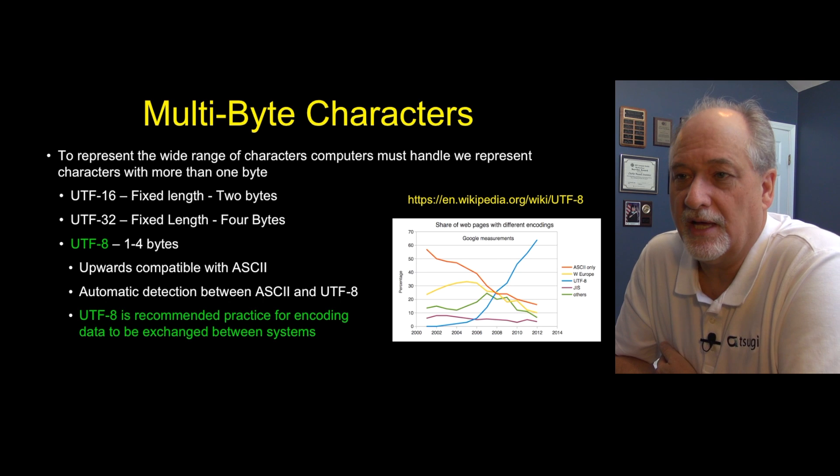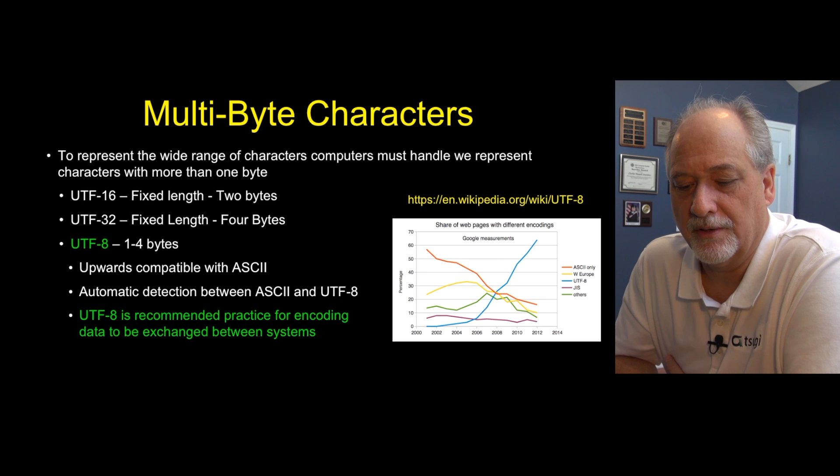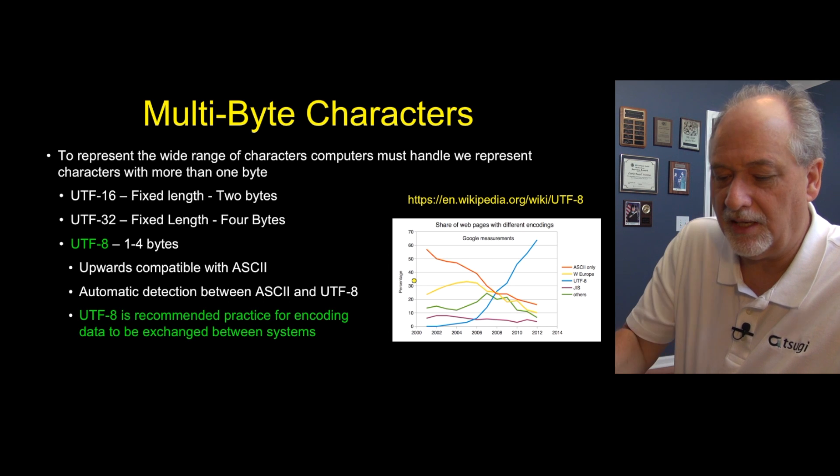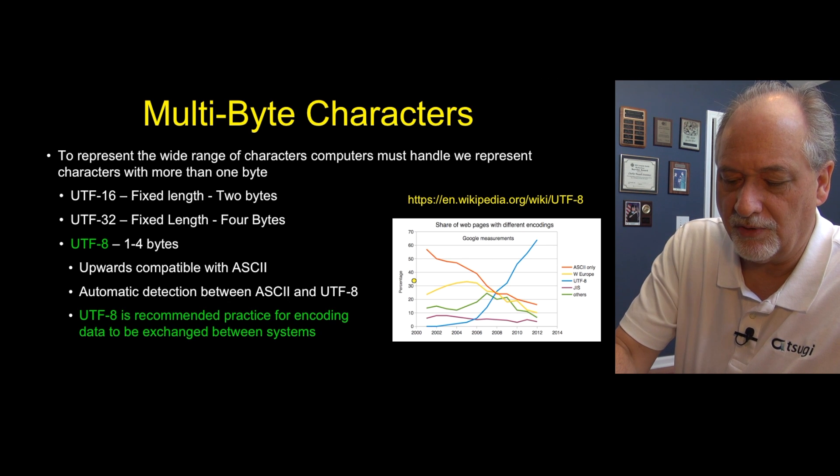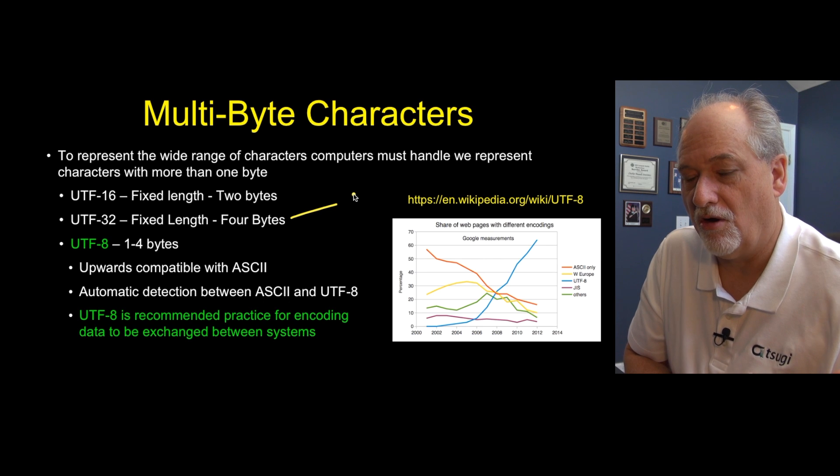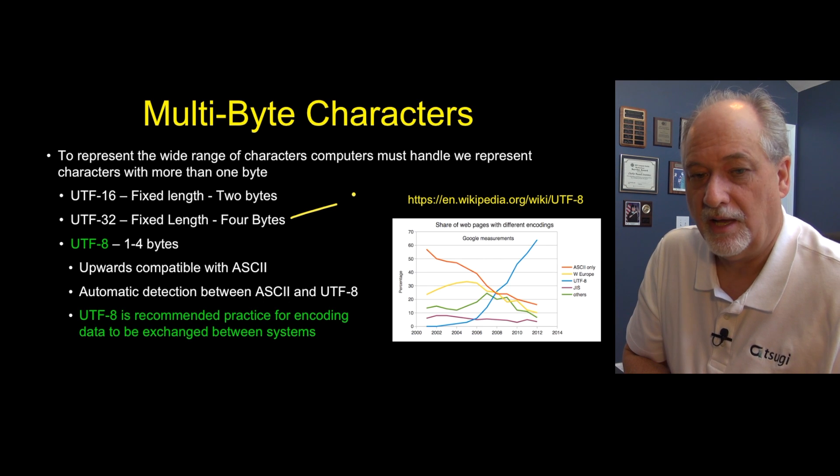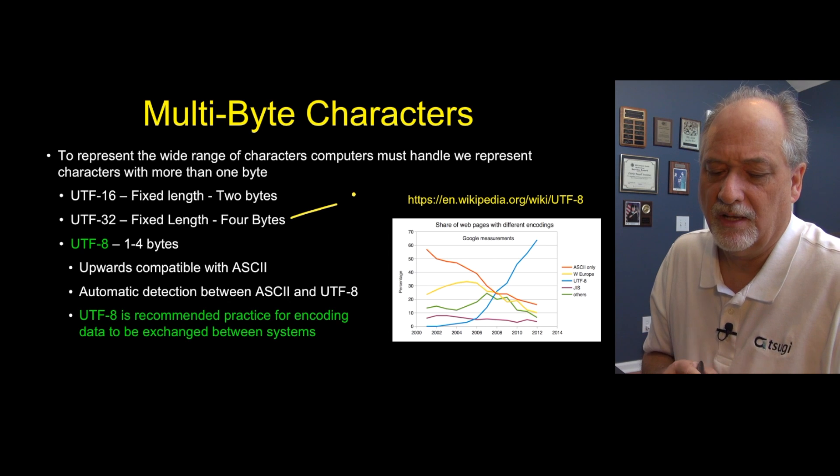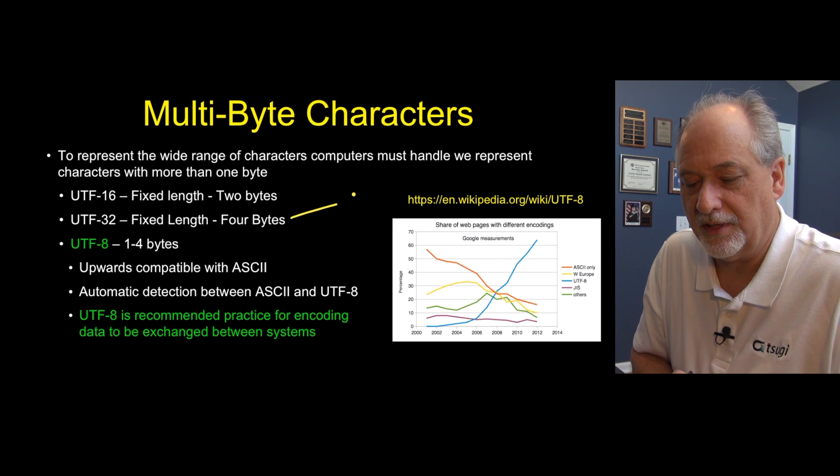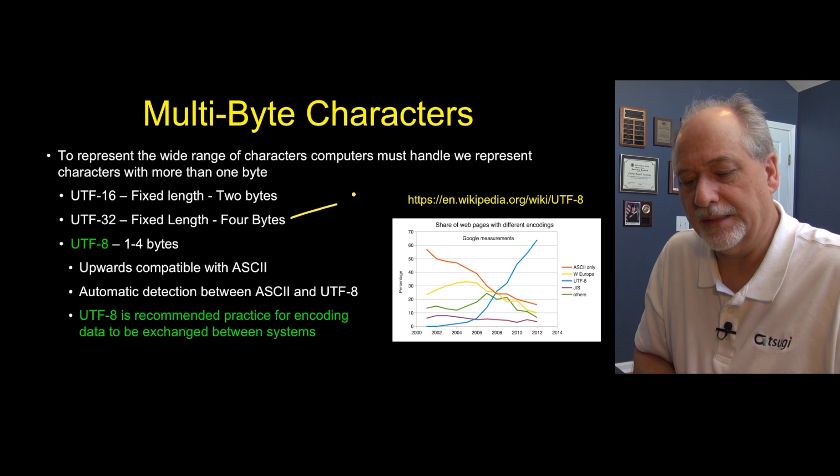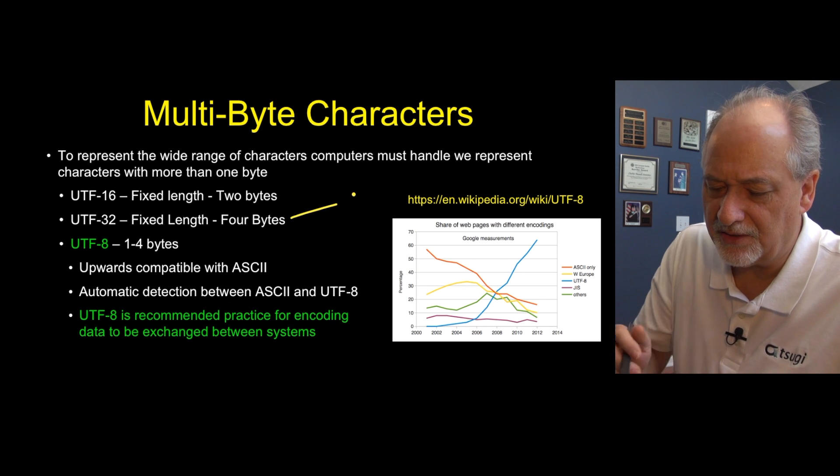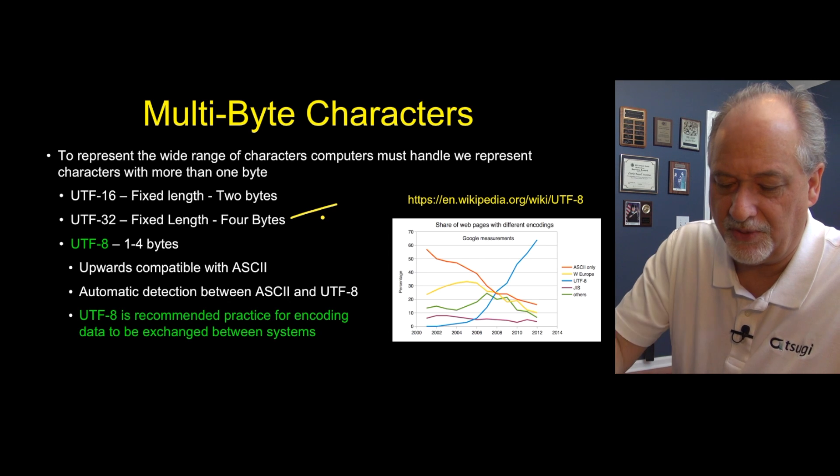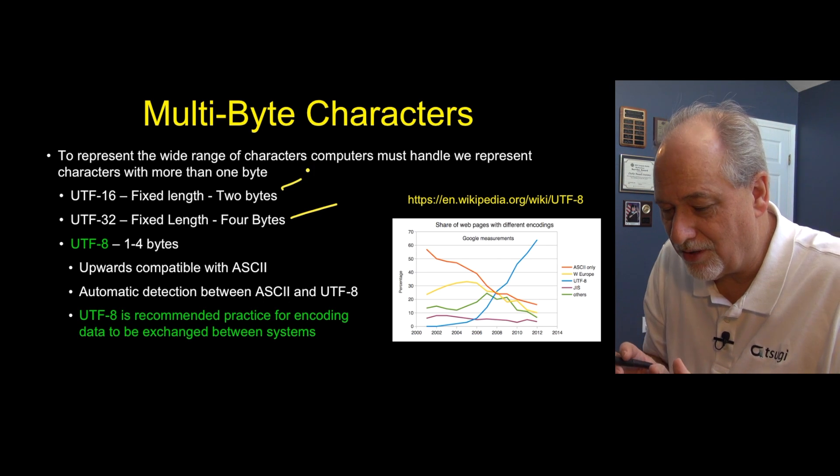The problem is that if we sent Unicode across the network, it would be way too large. It'd be this UTF-32, which instead of being eight bytes per character, would be four bytes per character. And so it would take all of the data that we build and make it four times larger. And it'd be very difficult. And so what they've come up with is ways to compress this. And UTF-16 is this weird thing. UTF-32 is really sort of the full Unicode, pretty much. UTF-16 is a subset of Unicode.